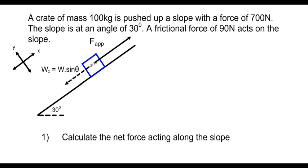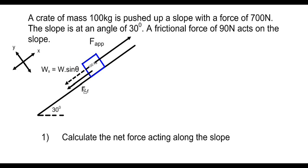There is a frictional force acting on the slope. Friction acts opposite to the direction of motion. Because the object is sliding up the slope, the frictional force acts down the slope. This is important: friction always acts in the direction opposite to the motion of the box.